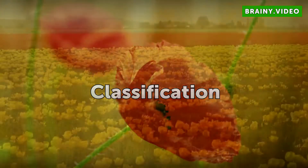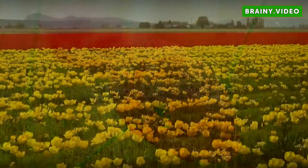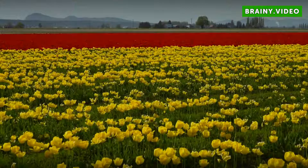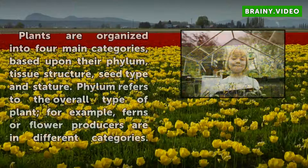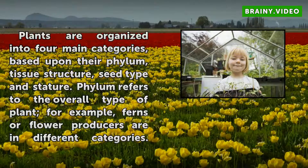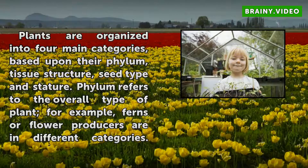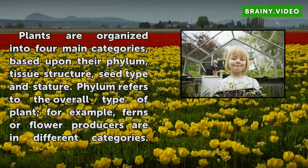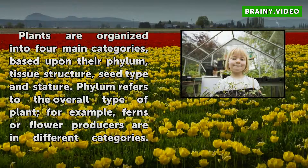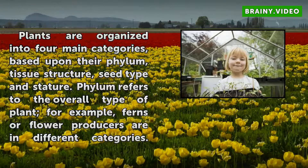Classification. Plants are organized into four main categories based upon their phylum, tissue structure, seed type, and stature.